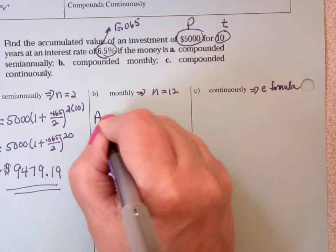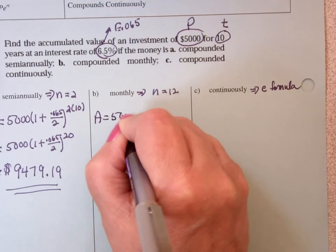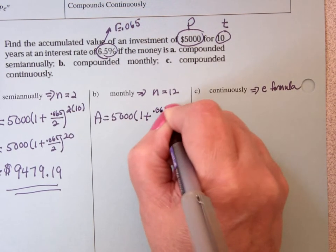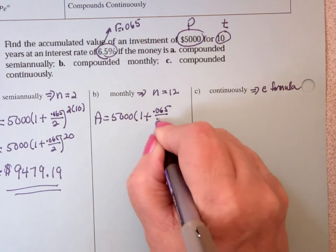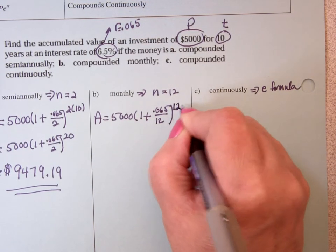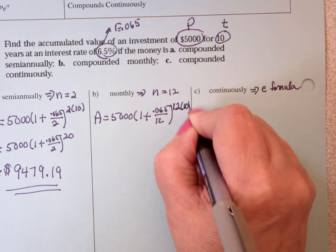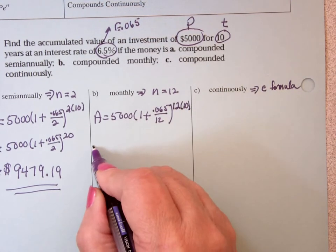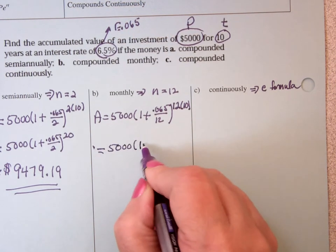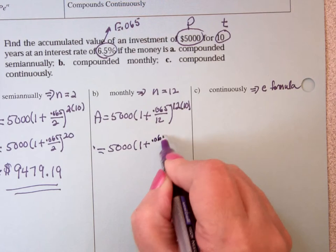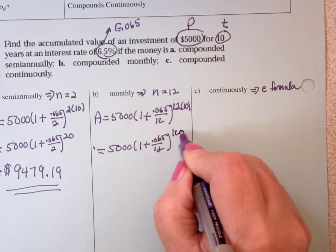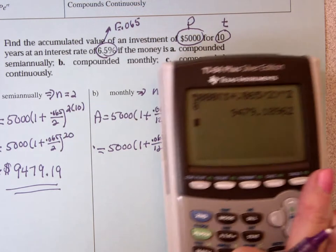Then A is 5,000 times 1 plus .065 divided by N. R divided by N. That's 12. 12 times T, which is 10. Which is 5,000 times 1 plus .065 divided by 12. And 12 times 10 is 120. So I get to do this again.